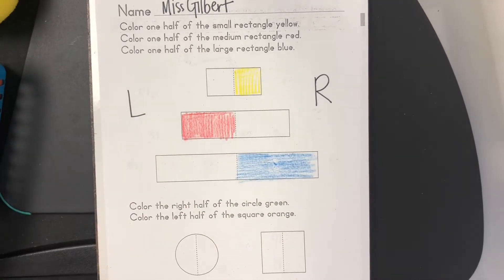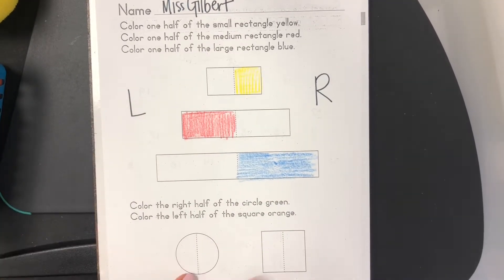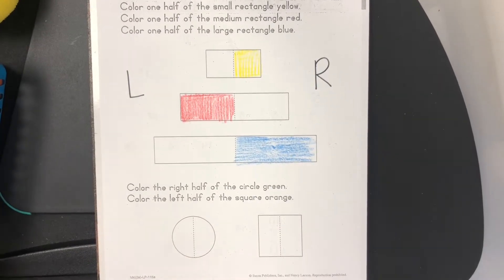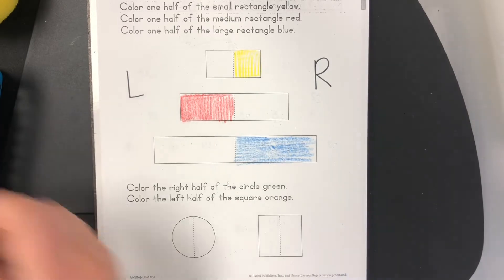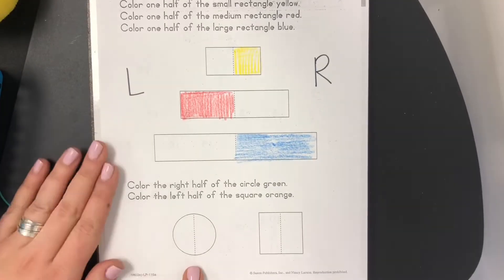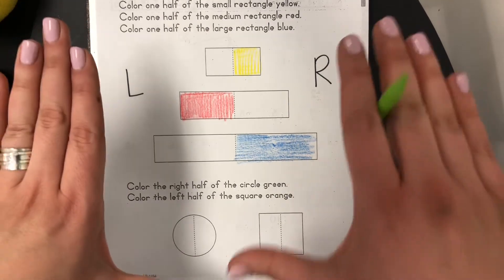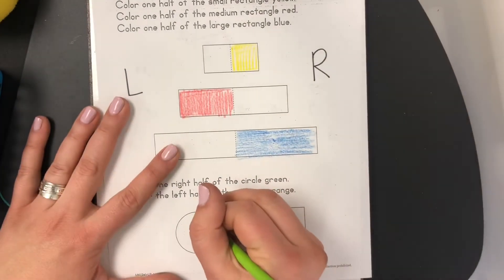Okay now we've got a circle and a square. Color the right half of the circle green. The right half. So find the circle. The right half. This is the left side. This is the right side. So the right half of the circle is green.